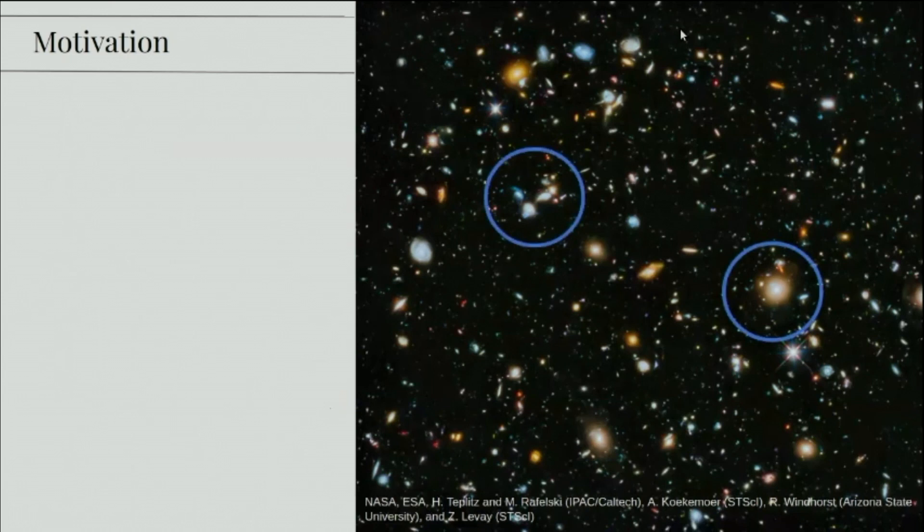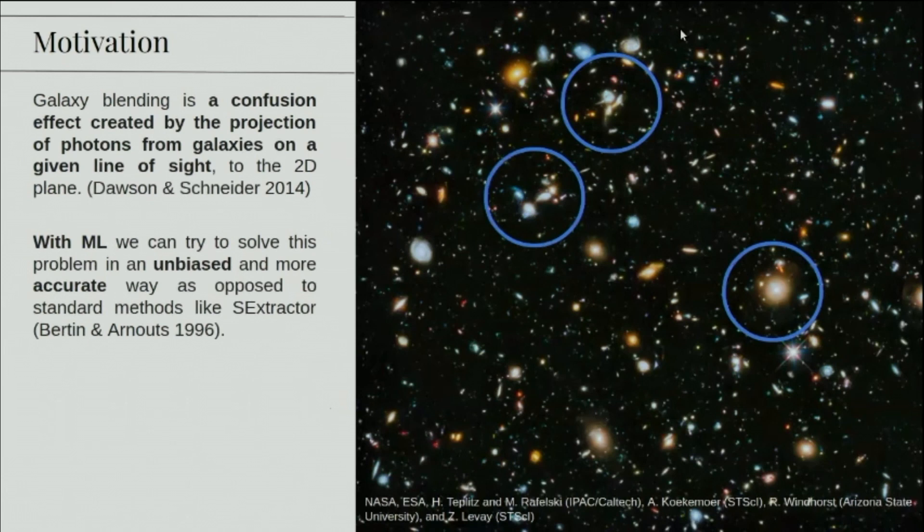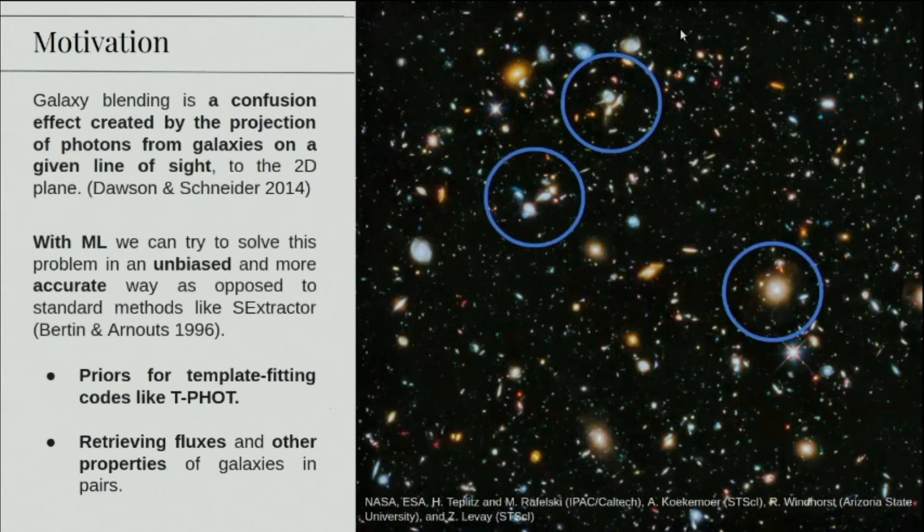Onto the motivation for this project. In this Hubble Deep Field image, we can see some examples of galaxy blending, which is a confusion effect created by the projection of photons from galaxies on a given line of sight. This is a problem since to estimate parameters, we need to reconstruct their individual light profiles. With machine learning, we can try to solve this problem in an unbiased and more accurate way, as opposed to standard methods like SExtractor. These reconstructions can then be used as priors for template fitting codes like EAZY and also for retrieving galaxy properties for these galaxies in blends.